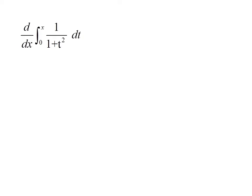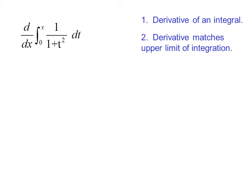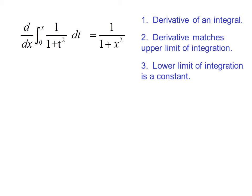Here's another example: d/dx of the integral from 0 to x of 1 over (1 + t²) dt. We are taking the derivative of an integral; the derivative matches the upper limit of integration; and the lower limit of integration is a constant. So once again, we can just write our answer, replacing t with x: 1 over (1 + x²).